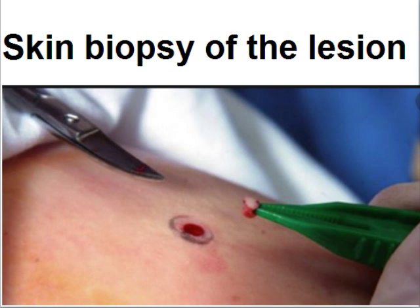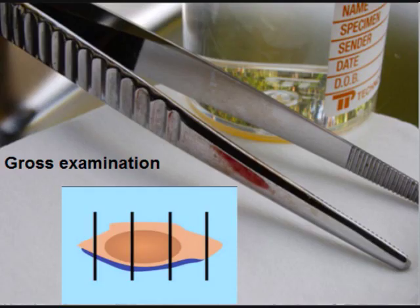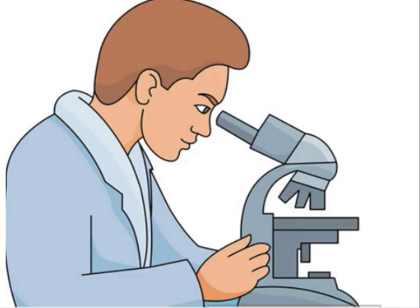Usually skin biopsy is done under local anaesthesia, with excision of normal skin. It is usually elliptical in shape. The specimen was sent to the lab and gross examination was done, then processed for histopathological examination.